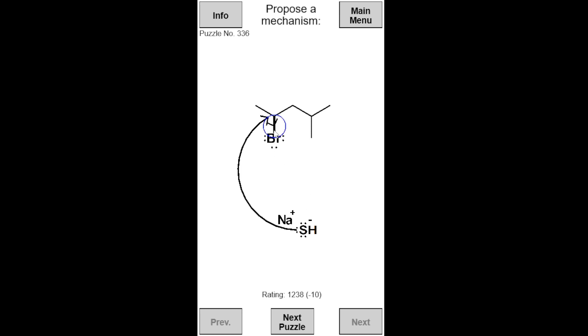Arrows can also be started from a bond instead of a lone pair. Hydrogen atoms are hidden by default. If you think a hydrogen atom is part of the solution to a puzzle, you can show the hydrogen atoms by tapping the atom they are attached to.